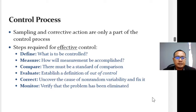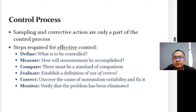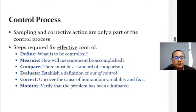Fourth, evaluate — establish a definition of out-of-control. Management must establish this definition, because even a process functioning as it should will not yield output that conforms exactly to the standard, simply because of the natural variation inherent in all processes, manual or mechanical. Fifth, correct — uncover the cause of non-random variability and fix it. When a process is found to be out of control, corrective action must be taken. Sixth, monitor — ensure that corrective action is effective by monitoring the output for a sufficient period to verify the problem has been eliminated.